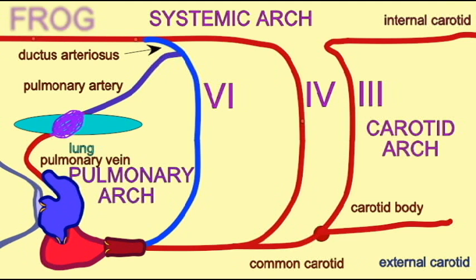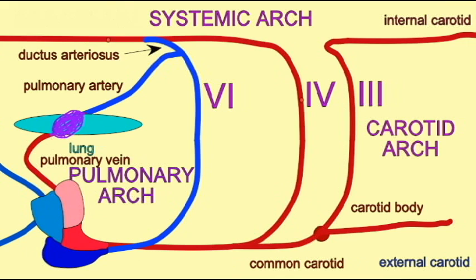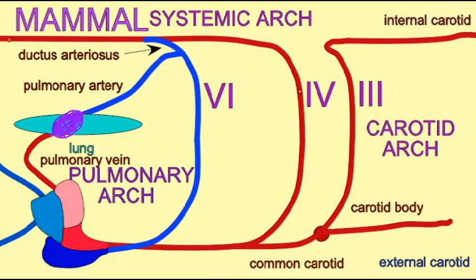The fourth arch in mammals is the single systemic arch. Reptiles have left and right versions, but in mammals only the left systemic arch is retained as the arch of the aorta.